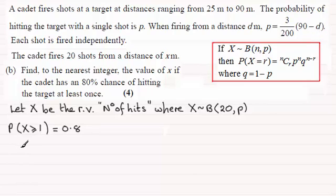So carrying on, the probability X is greater than or equal to 1, it's better if we just say 1 minus the probability of X equaling 0. That will equal 0.8. So clearly the probability that X equals 0 must be equal to 0.2.